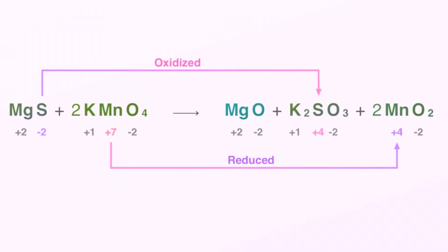Okay, let's take a look at this reduction oxidation reaction. We start out with the reactants magnesium sulfide, that's MgS, and two moles of potassium permanganate, that's the 2KMnO4. When those are mixed together and activation energy is applied from our plasma wand, you get the products MgO, that's magnesium oxide, you get potassium sulfite, that's K2SO3, and two moles of manganese oxide, that's the 2MnO2.